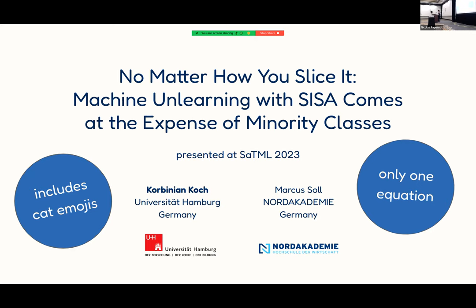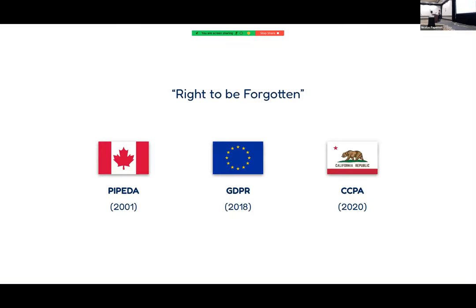This talk is about machine unlearning. Machine unlearning is motivated by the so-called right to be forgotten, which means that any individual can request from a service provider that they delete their personal data. This is a right that exists in Canada, the European Union, and California.